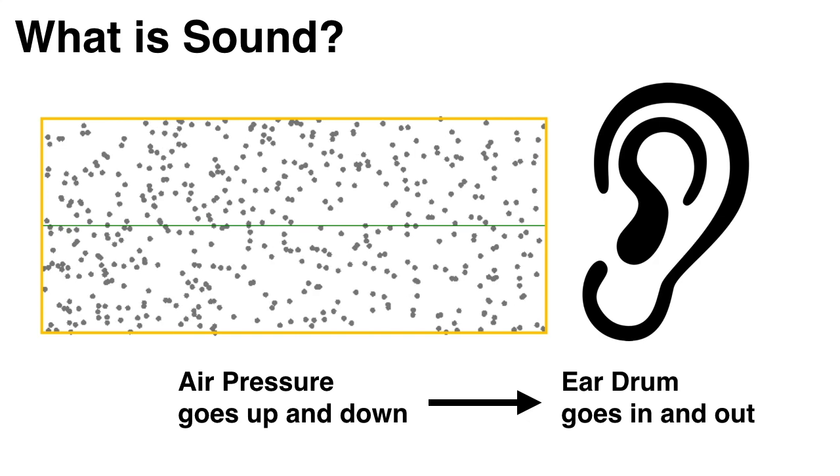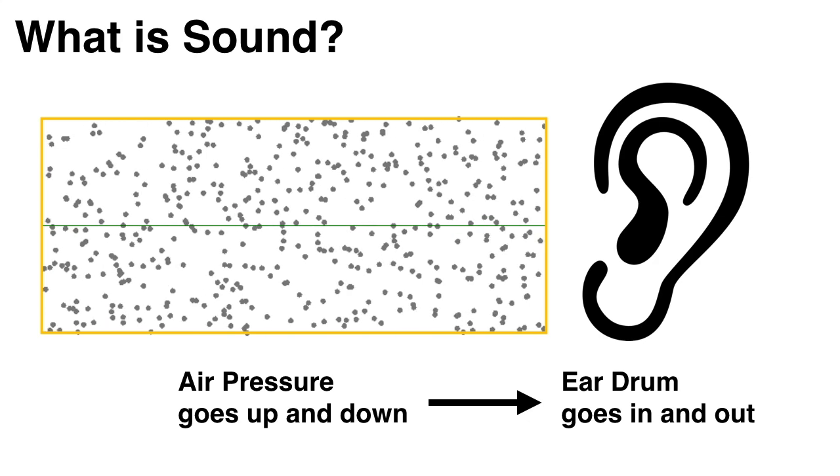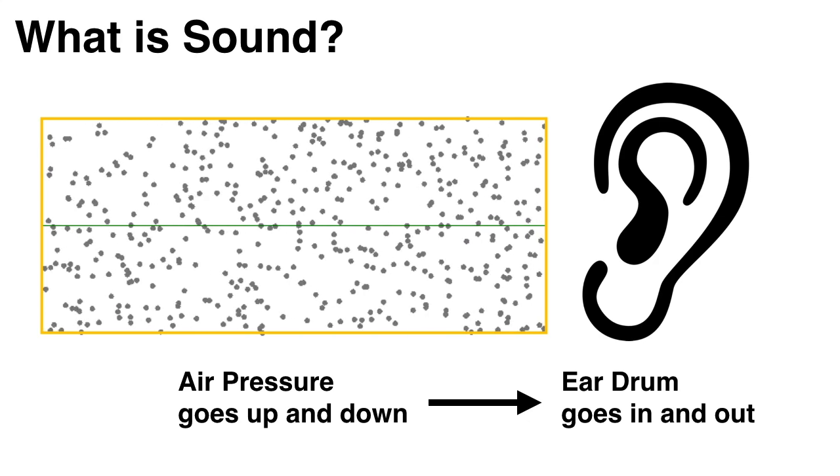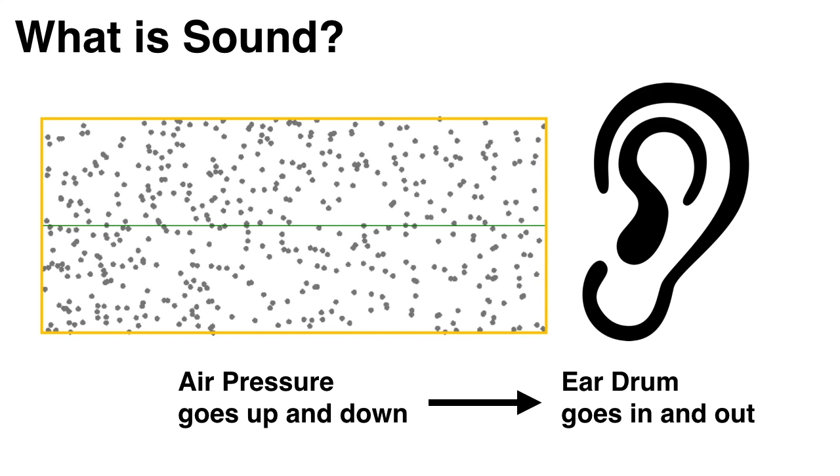Sound waves cause changes in air pressure as particles bunch together and spread apart. Now we can't see these ripples, but our ears can hear them.